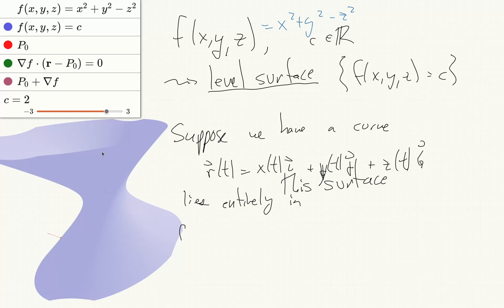So that means that f of x(t), y(t), z(t) is equal to c. Or you might also just write f of r(t) equals c, to be shorter. This is what we mean if we say this.